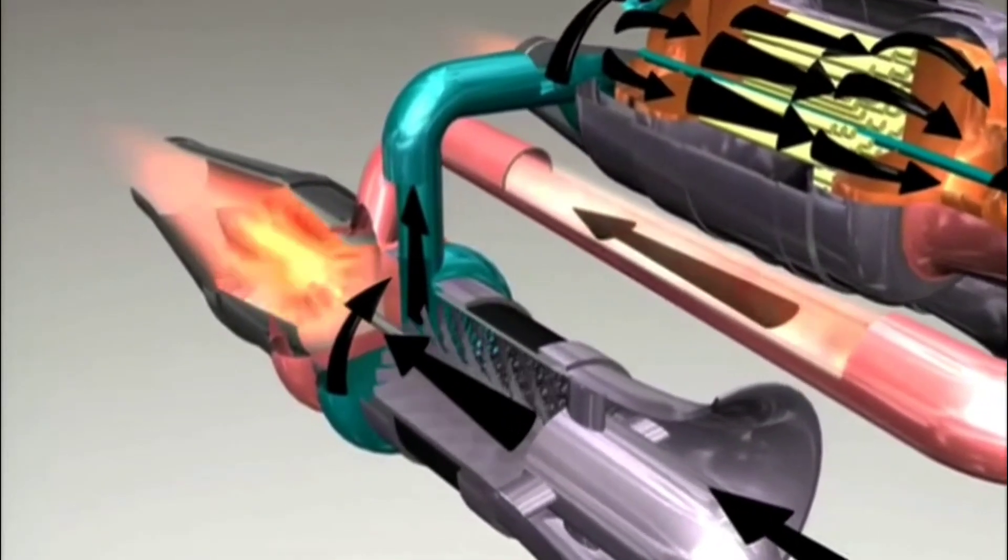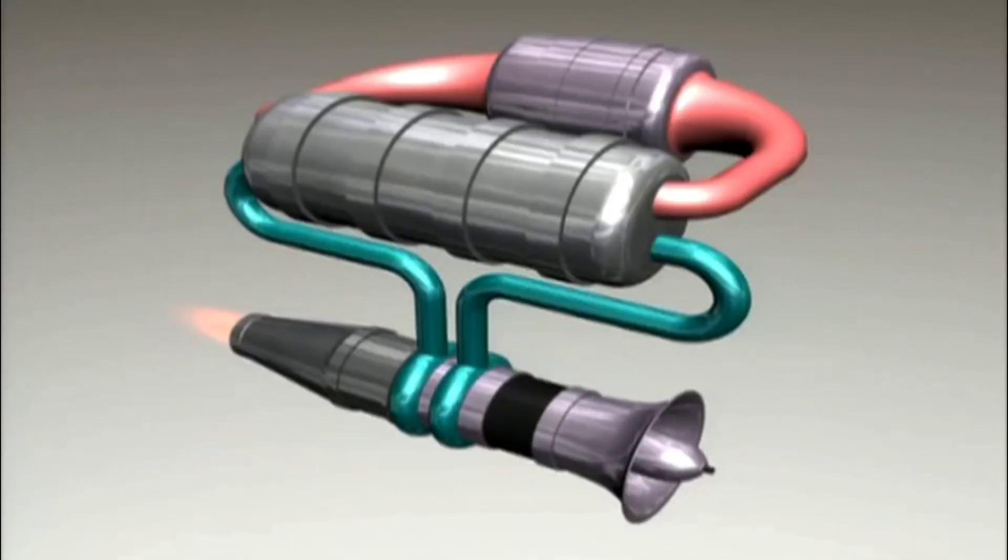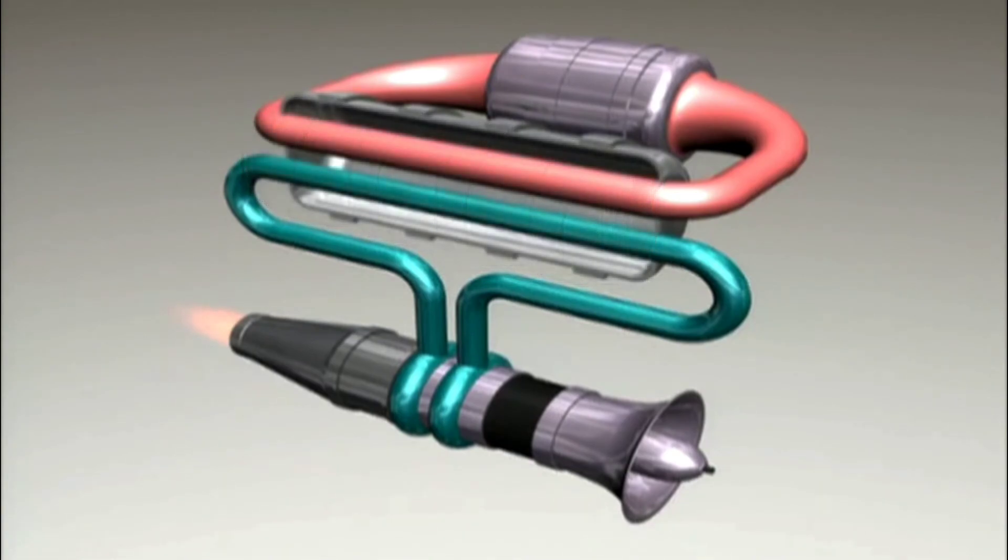But this so-called direct cycle engine proved to have a major drawback. The downside to the direct cycle method led the Atomic Energy Commission scientists to propose a second kind of atomic motor, called the indirect cycle.